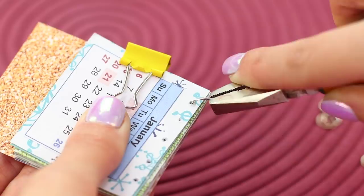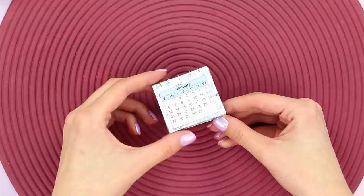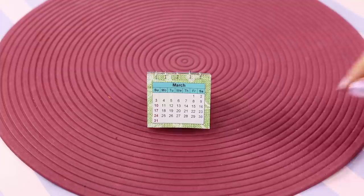For convenience, you can use pliers. Glue the cardboard base. The result is a small desk calendar. It doesn't take up much space on your desk and is very convenient to use.